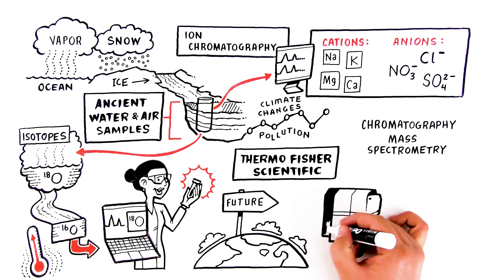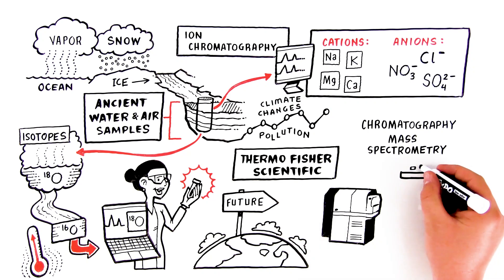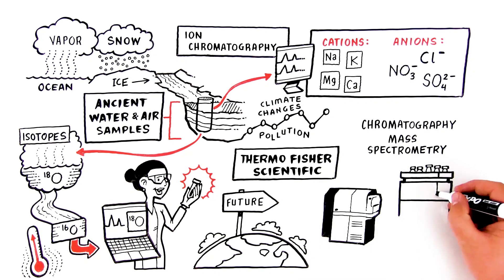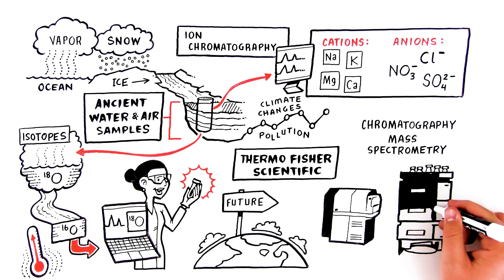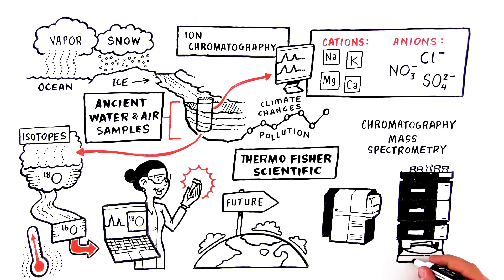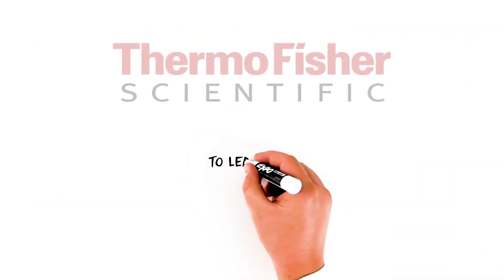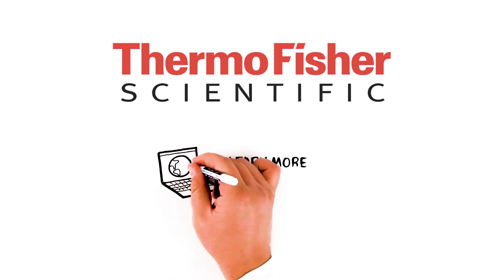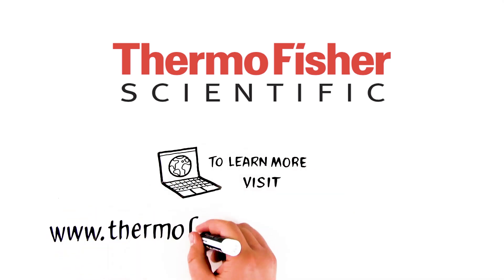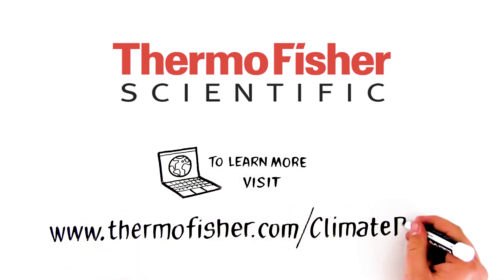Including our triple quadrupole, multi-collector, and high-resolution ICP-MS, ion chromatography and greenhouse gas analyzers, and gas isotope ratio mass spectrometers, including carbonate device and thermal ionization mass spectrometers. To learn more about Thermo Fisher Scientific's instrumentation for climate change research, visit www.thermofisher.com/climateresearch.